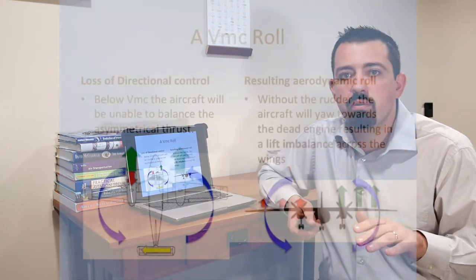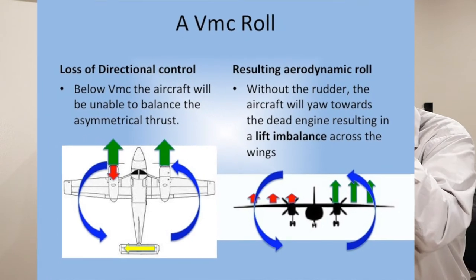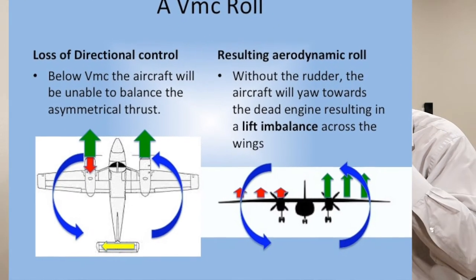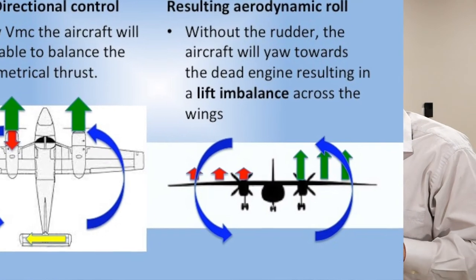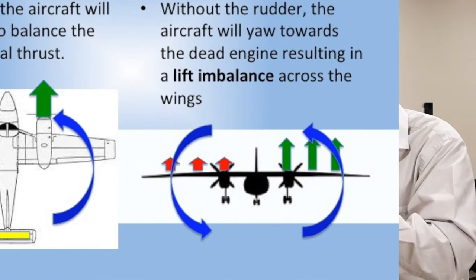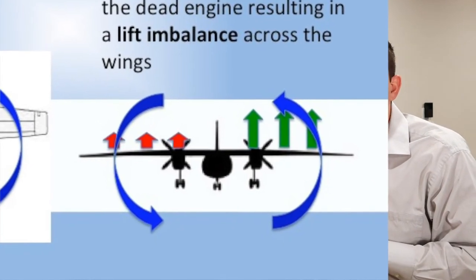As it does that, we're already at a really slow speed. In the Aztec, this was 80 knots and stall speed was somewhere around mid-60s. So we are slow and getting close to a stall. The result of that right wing accelerating forwards and the left wing decelerating backwards—that rotational motion is going to give a lift imbalance across the wings. The left wing is not going to be producing as much lift as the right wing, which is also going to cause the aircraft to roll.